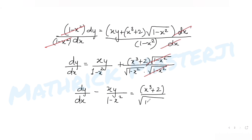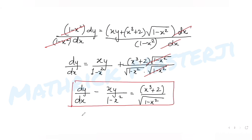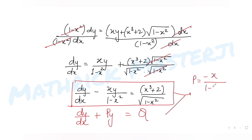This is now in the standard linear form dy/dx + Py = Q. Comparing, I get P = -x/(1 - x²) and Q = (x³ + 2)/√(1 - x²).